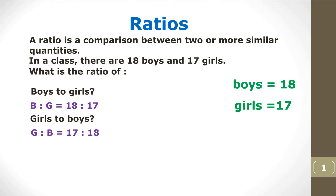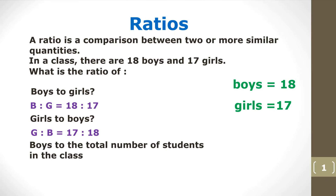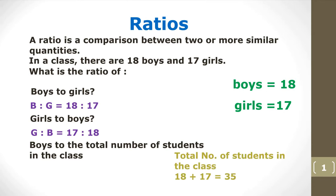What is the ratio of boys to the total number of students in a class? There are 18 boys and 17 girls — add them up, we get 35 students altogether. So therefore the ratio is 18 to 35.